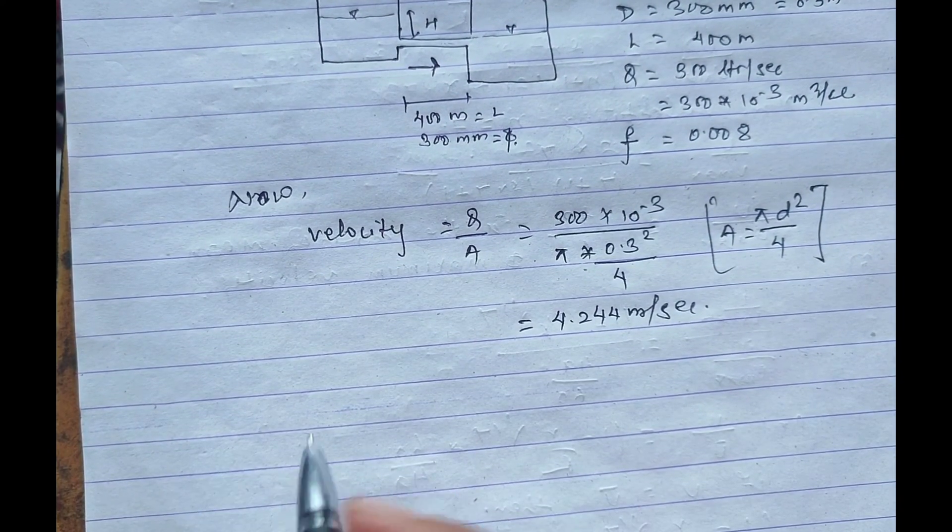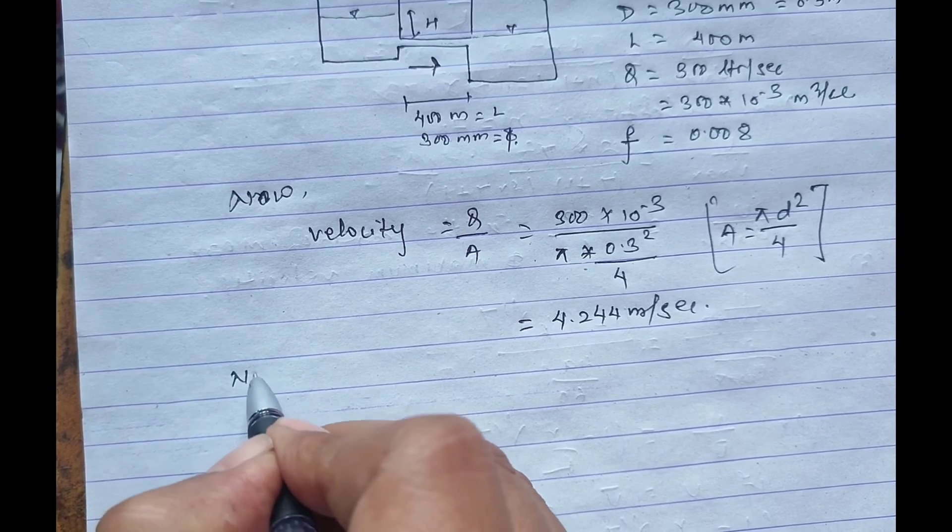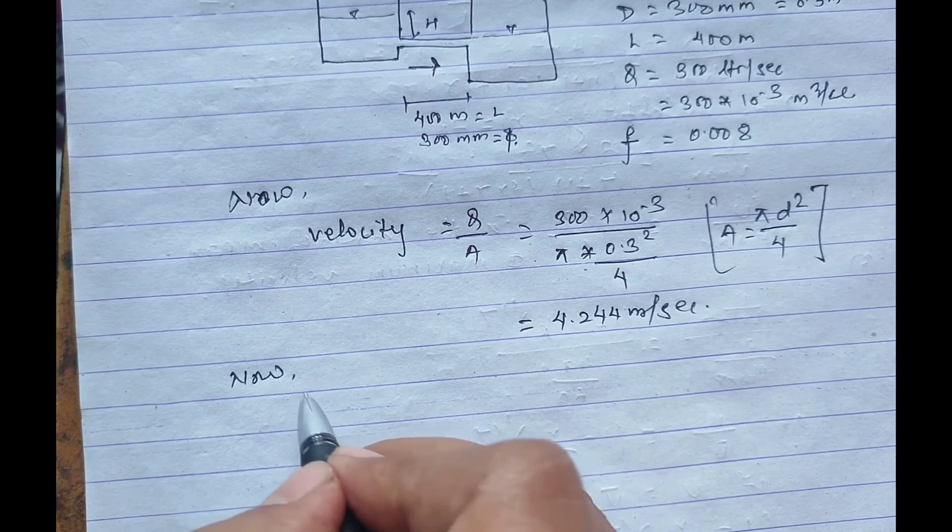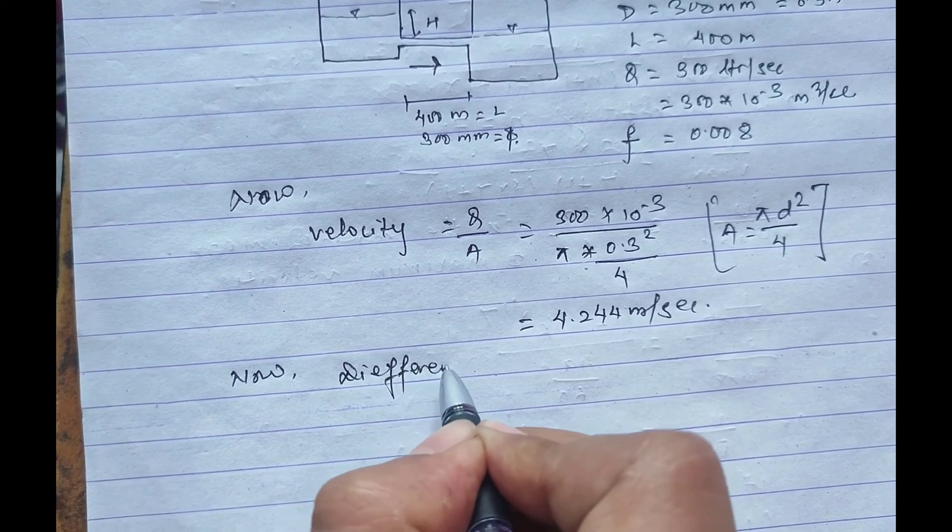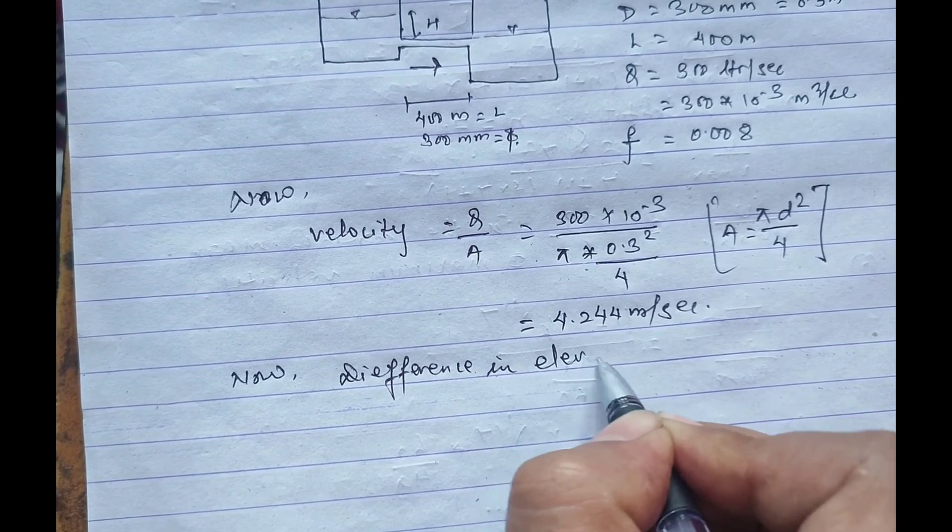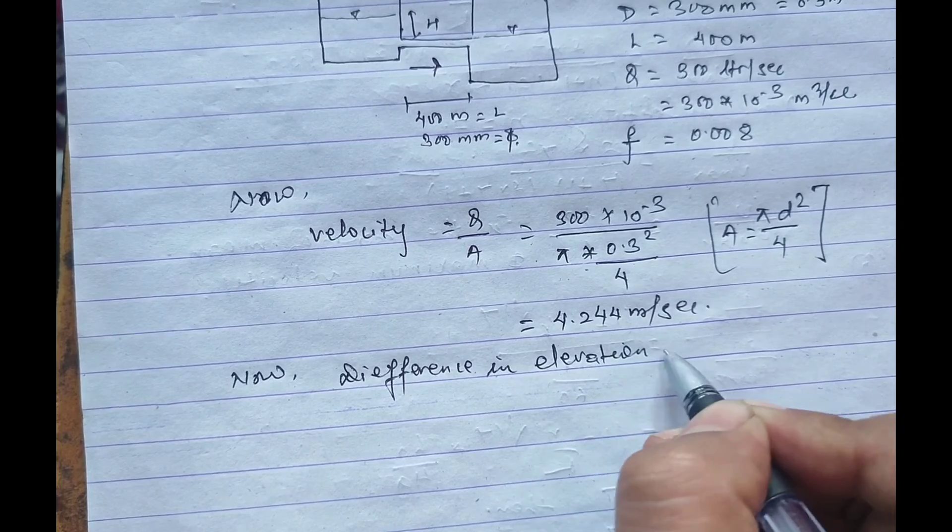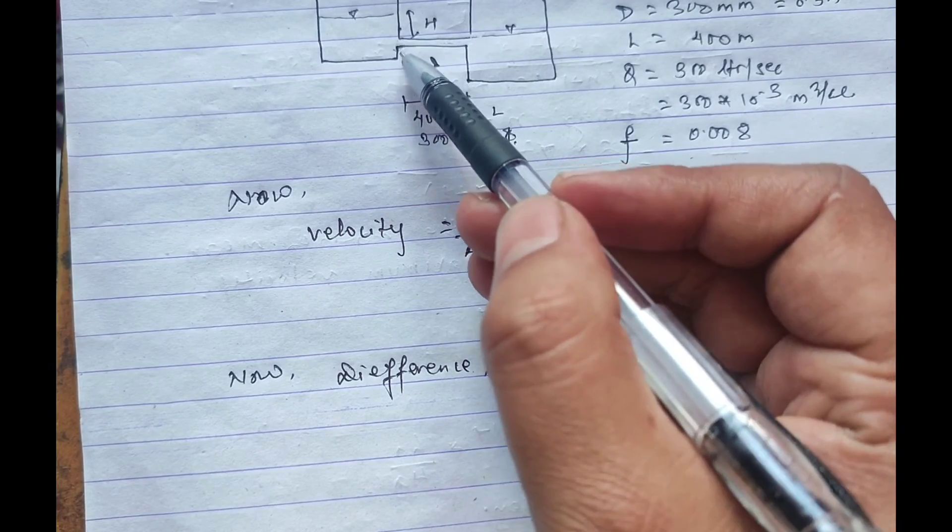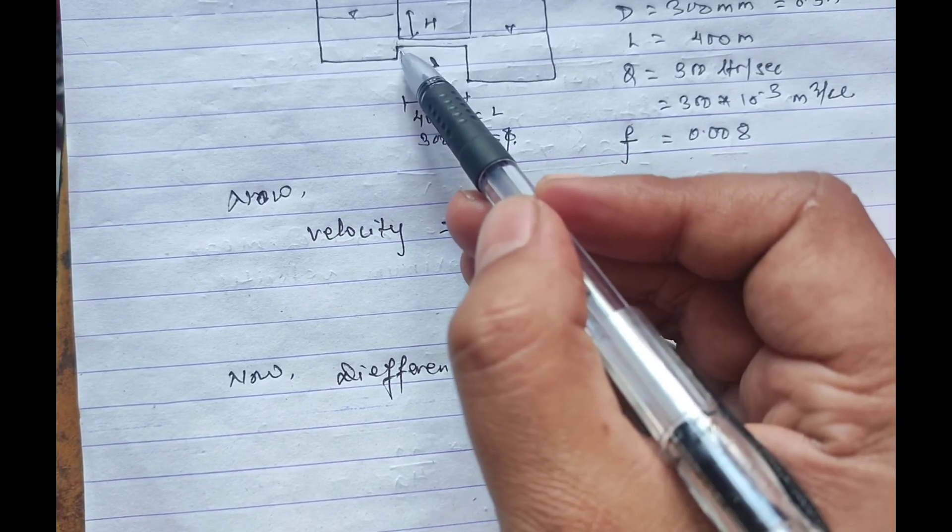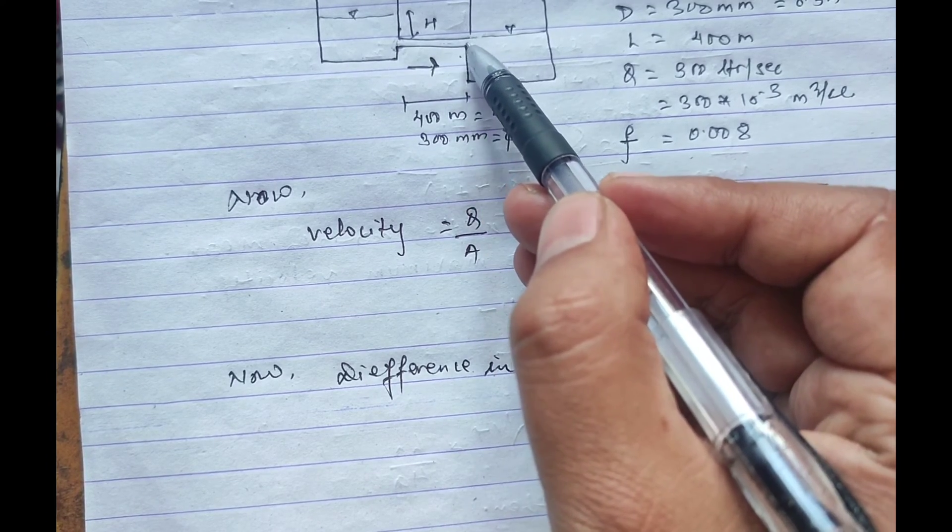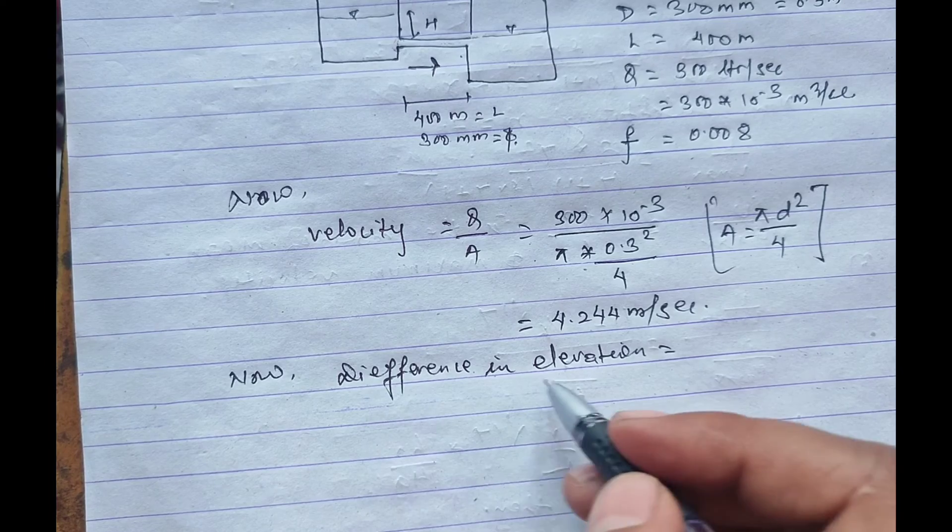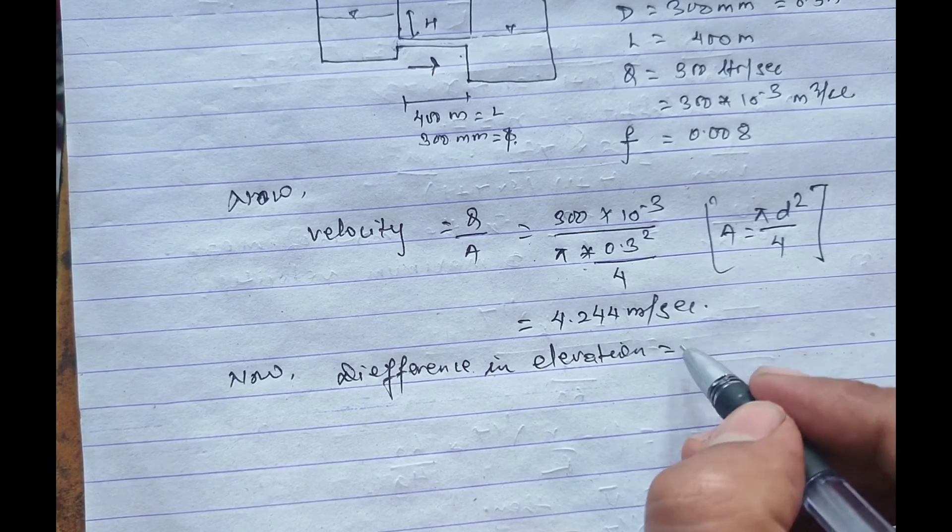Now we have to calculate the difference in elevation. Difference in elevation is equal to head loss will occur in three places: at the entry in the flowing direction, due to friction, and at the exit point.